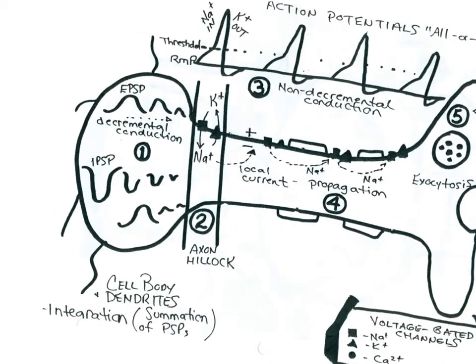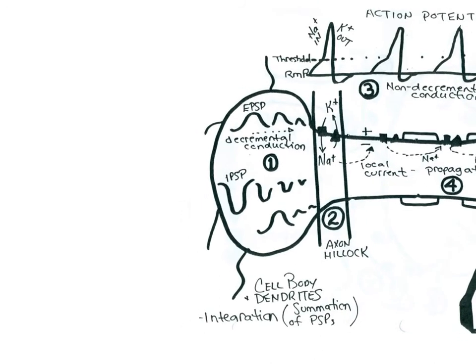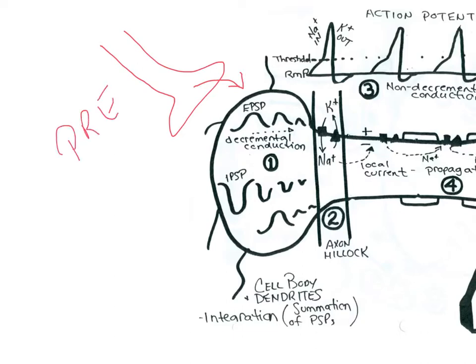We're going to start the story at the beginning here in the cell body or the dendrite. What we're assuming is that another cell has already stimulated this cell — there has been a release of neurotransmitter from one cell, it has gone across the synapse, and is now stimulating this cell. This would have been the presynaptic cell and this is the postsynaptic cell. The neurotransmitter binds to a receptor on the postsynaptic membrane, which is why these responses are called postsynaptic potentials.